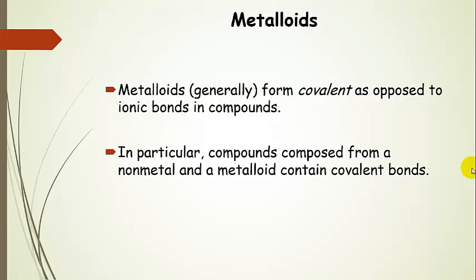In general, they form covalent as opposed to ionic bonds in compounds. In particular, if a metalloid is bonded to a nonmetal, then it's going to form covalent as opposed to ionic bonds. We'll talk about covalent bonding later on in the course.